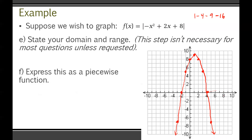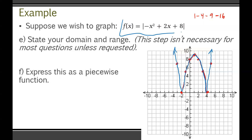The stuff below the x-axis has to be flipped above. Notice this point is down at negative 7, so it has to flip up to positive 7. The same with the other side — it also goes up to positive 7, and everything else follows with it. The section that was already above the x-axis stays as it is. That's our absolute value graph — the original quadratic with its below-axis portions reflected upward.